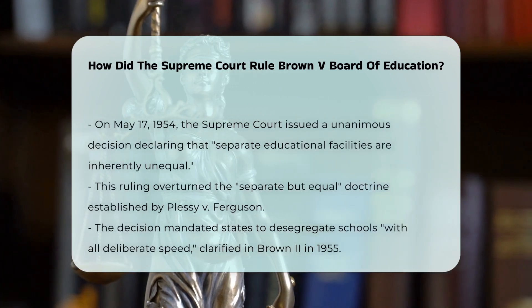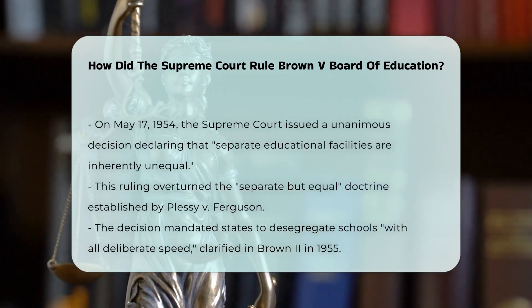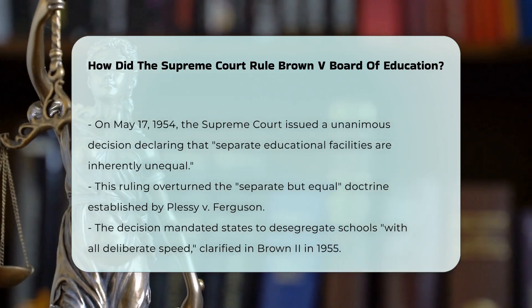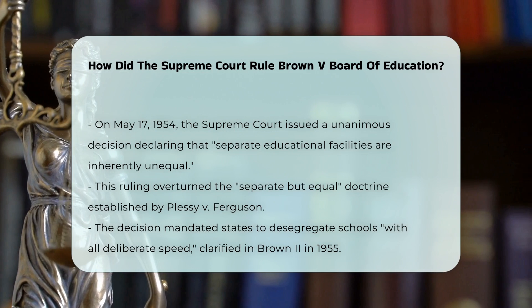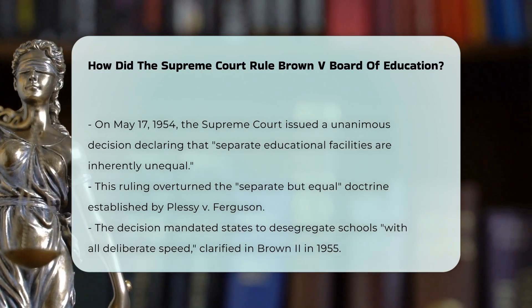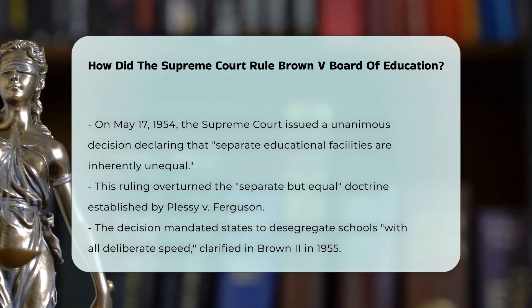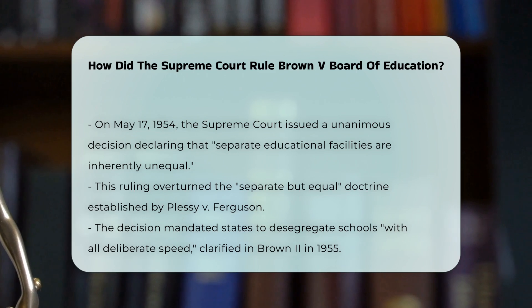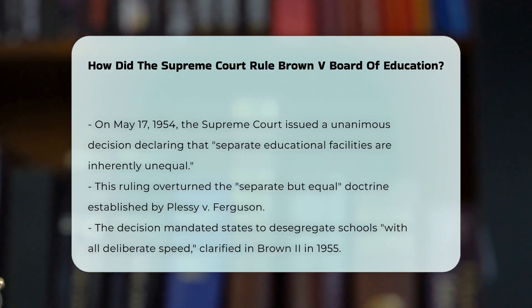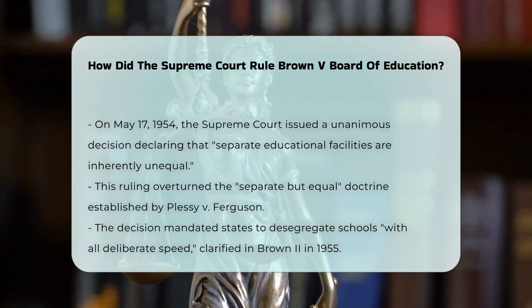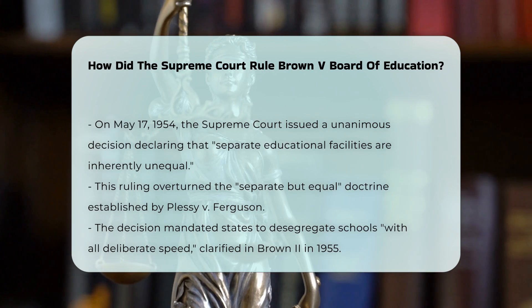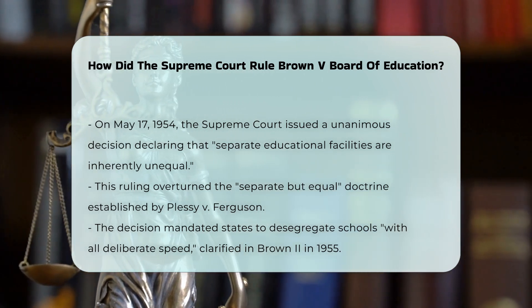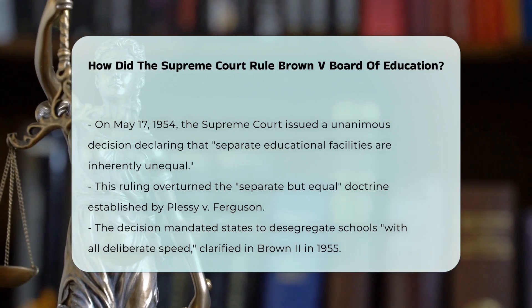Chief Justice Earl Warren delivered the opinion, stating that separate educational facilities are inherently unequal and thus violate the Equal Protection Clause of the 14th Amendment. This ruling effectively overturned the separate but equal doctrine established by Plessy v. Ferguson. The decision did not specify a method for ending segregation, but mandated that states desegregate schools with all deliberate speed, as clarified in the subsequent case Brown II in 1955.